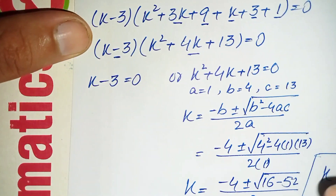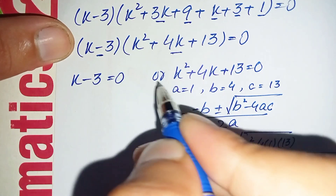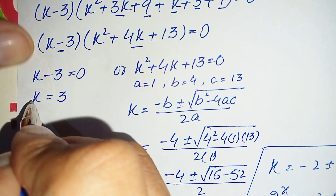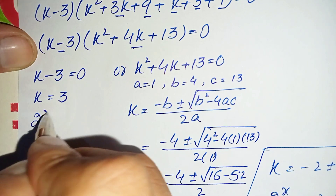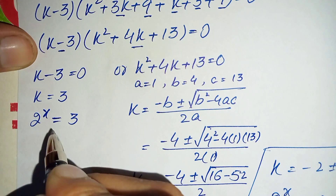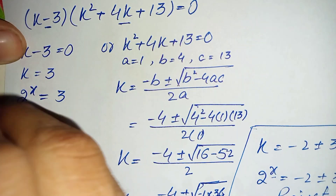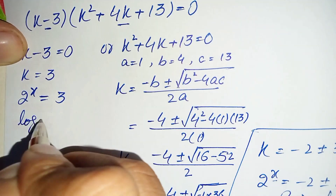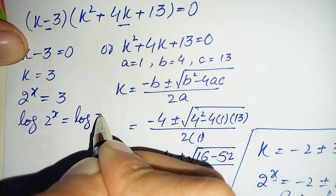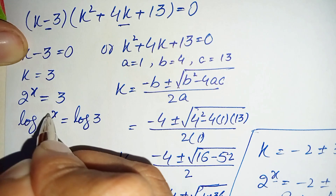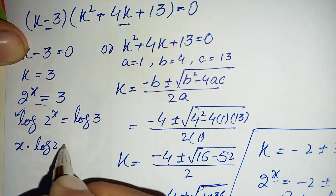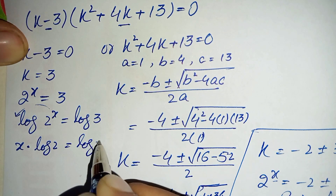From k minus 3 equals 0, we get k equals 3. Since k equals 2 raised to power x from our substitution, we have 2 raised to power x equals 3. Now we take the common logarithm on both sides: log of 2 raised to power x equals log of 3. Then we move x to the front using the log power rule: x times log 2 equals log 3.